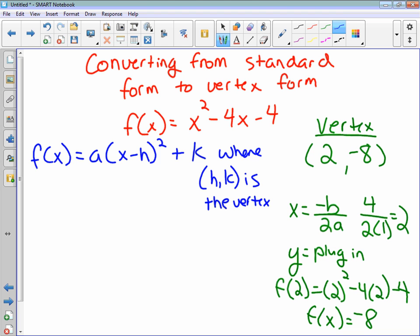In that case, looking at your vertex, the number 2 is your h, the number negative 8 is your k.